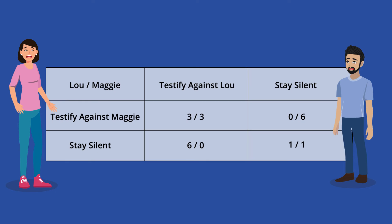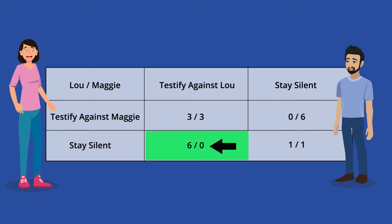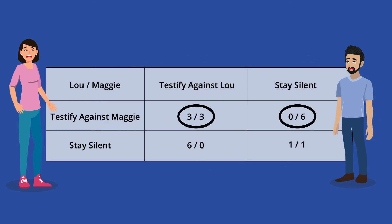Take Lou's perspective. Maggie isn't your sister, girlfriend, or even friend. You have no reason to believe she isn't going to take that attractive immunity deal. If she talks, it's in your best interest to talk too. If she stays silent, talking is still your best option — you'll get off with no jail time. Since you can't control Maggie's behavior, testifying against her is the smartest choice you can make. The same logic applies to Maggie's perspective. Therefore, both parties will end up testifying against the other.